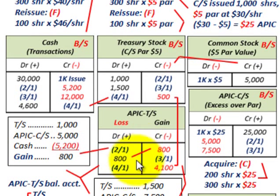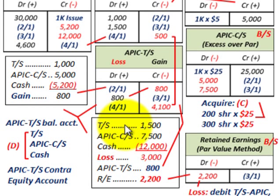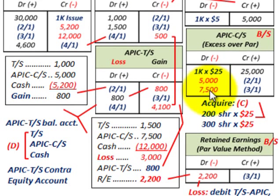Over in additional paid-in capital for common stock, we would debit that for $7,500 — simply 300 shares times $25 per share. The additional paid-in capital for treasury stock becomes a balancing entry between our treasury stock, our additional paid-in capital for common stock, and our cash account. Treasury stock recorded at $1,500, additional paid-in capital for common stock debited $7,500, and cash credited for $12,000.